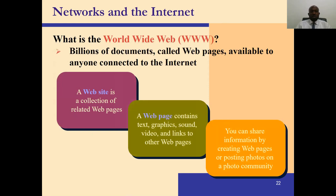The World Wide Web — WWW — refers to billions of documents, which is a group of web pages. A website is a collection of related web pages. A web page contains text, graphics, sound, video, and links to other web pages. The difference between a website and a web page is like a book — the whole book is the website, and the individual pages are the web pages.